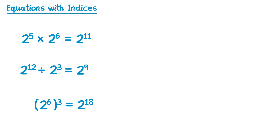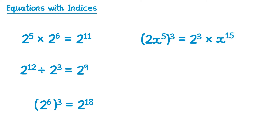Sometimes the bracket-to-the-power law could be written like this. In this one you have to raise the 2 to the power 3 and the x to the 5 to the power 3. So we start by doing 2 to the power 3, and then we multiply the powers for x: 5 times 3 is 15. You can simplify 2 to the power 3 — that's 2 times 2 times 2 which is 8 — so we end up with 8x to the power 15.